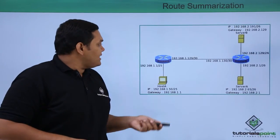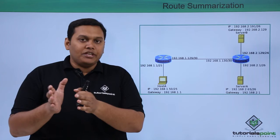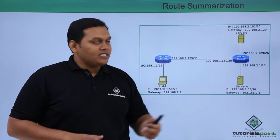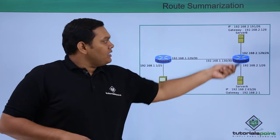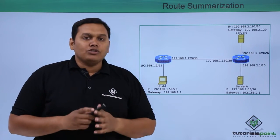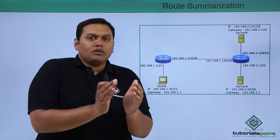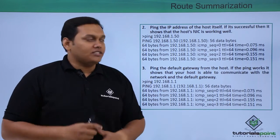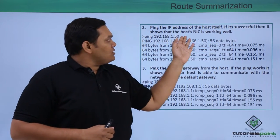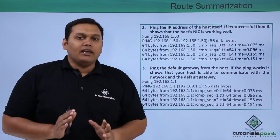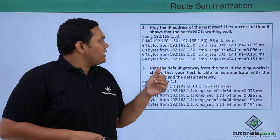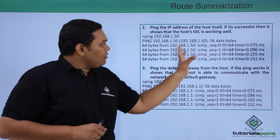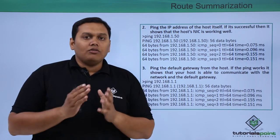Router A and Router B are used as communication between Host A, Server A, and Server B. Host A and the servers have a default gateway and need to communicate with each other. The second step is pinging the IP address of the host itself. If it is successful, it shows that the host's NIC — Network Interface Card — is working well. For example, pinging 192.168.1.50 gives you the result confirming the IP address is connected.